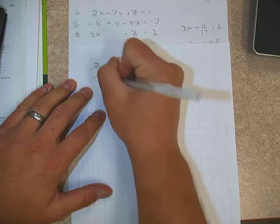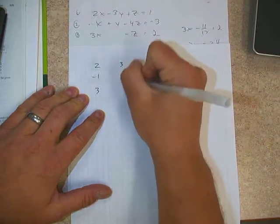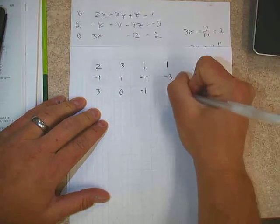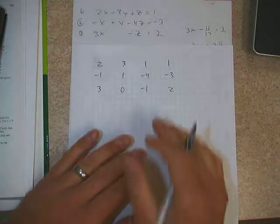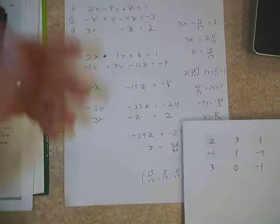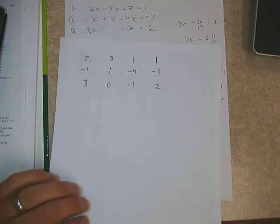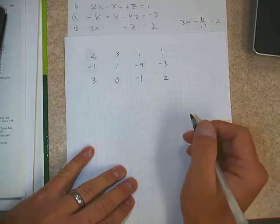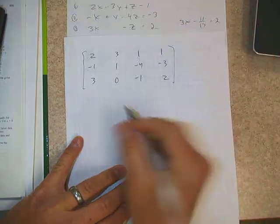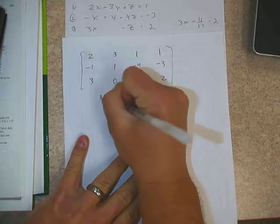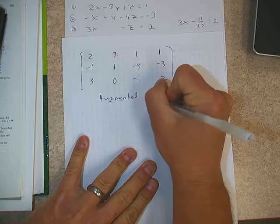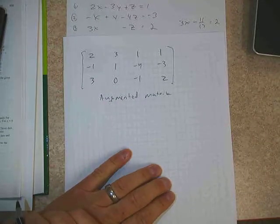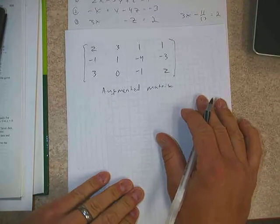If we take this original system and just write the coefficients down in the order they're given, looking at just the number parts only — because most of the work we did was just manipulating coefficients to eliminate variables — we can do the same thing by looking at coefficients without even using the variable letters. If we take all the coefficients and put them in one matrix, this is what we call an augmented matrix.